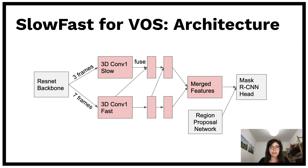Both pathways can see a variable number of frames. In the end, the concatenated outputs of the slow and fast pathways and the region proposals for the middle frame are used by the Mask RCNN head to compute segmentation masks for the middle frame.